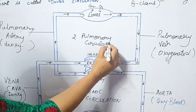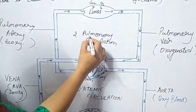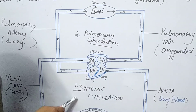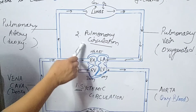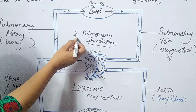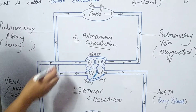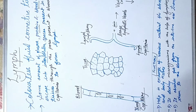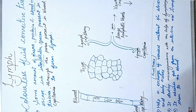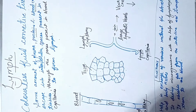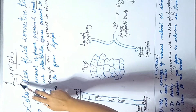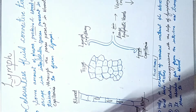The double circulation is completed in two parts: one is systemic circulation and the other is pulmonary circulation. Now let us discuss another circulatory medium for transportation — lymph.